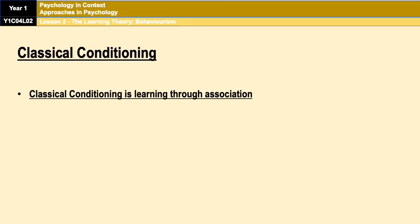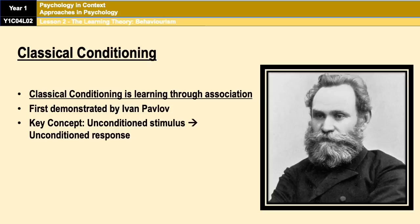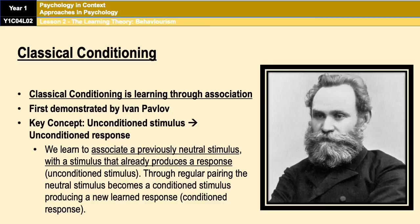Classical conditioning is learning through association — remember that sentence, it's a nice snappy answer to the question 'What is classical conditioning?' It was first demonstrated by Ivan Pavlov. Classical conditioning involves the key concept that all around us there are things that make us react just instinctively, and these are called unconditioned stimuli. For example, a loud noise makes us jump. The loud noise is the unconditioned stimulus, and the jumping or fear we experience is the unconditioned response. Nobody taught you to be afraid of a loud noise — it just is.